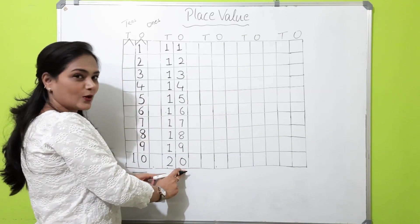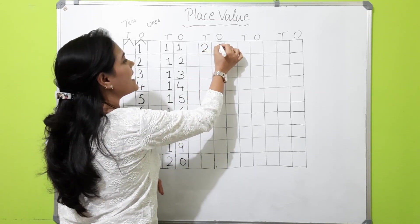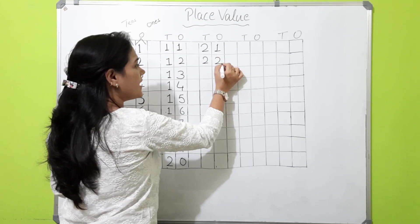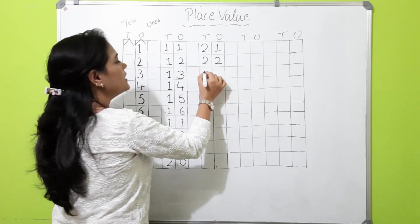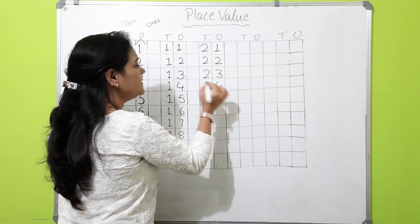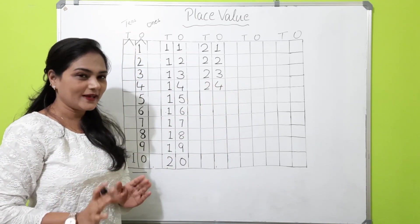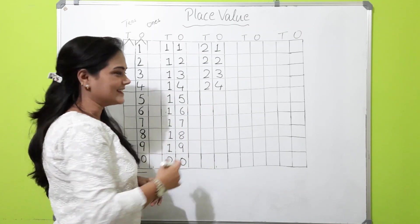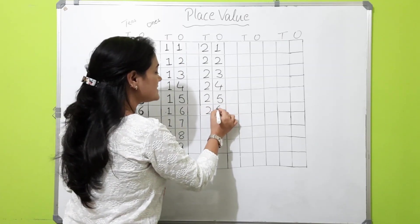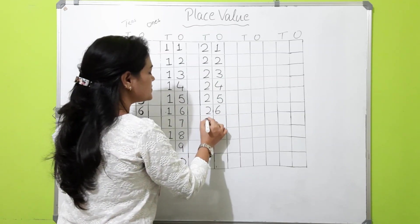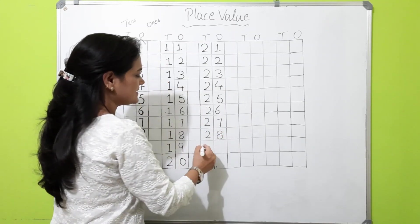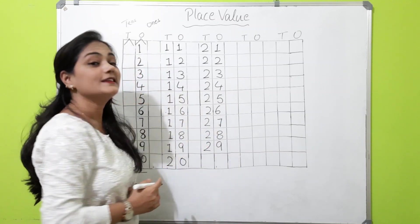Now we'll take two tens. Two tens and one — twenty-one. Two tens and two ones — twenty-two. Two tens and three — twenty-three. Two tens and four — twenty-four. Two tens and five — twenty-five. Two tens and six — twenty-six. Two tens and seven — twenty-seven. Two tens and eight — twenty-eight. Two tens and nine — twenty-nine.